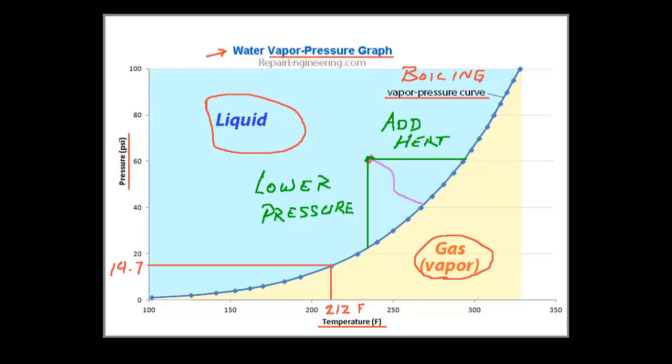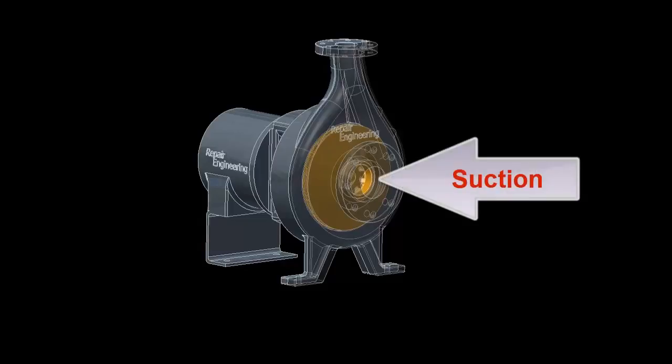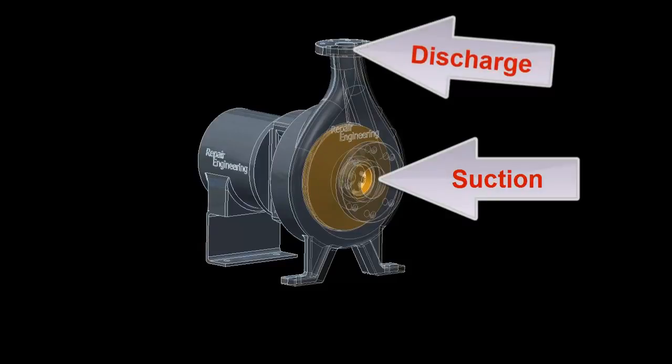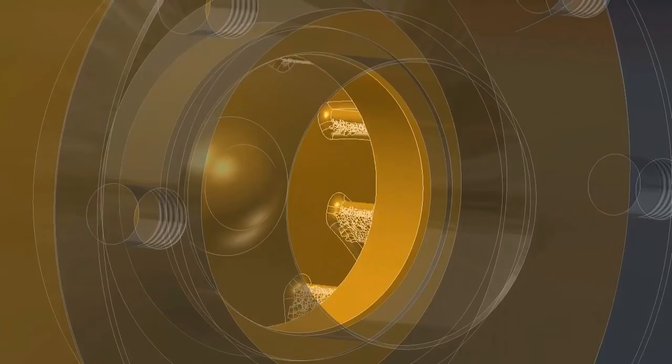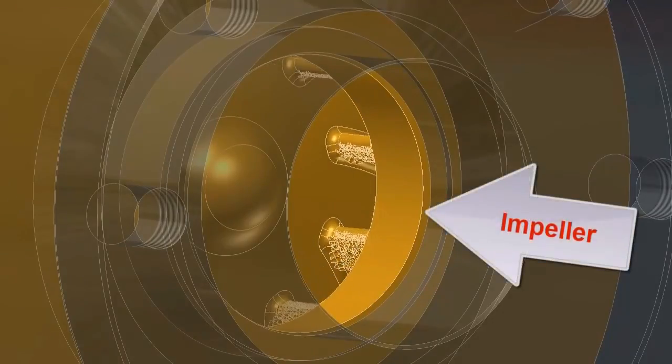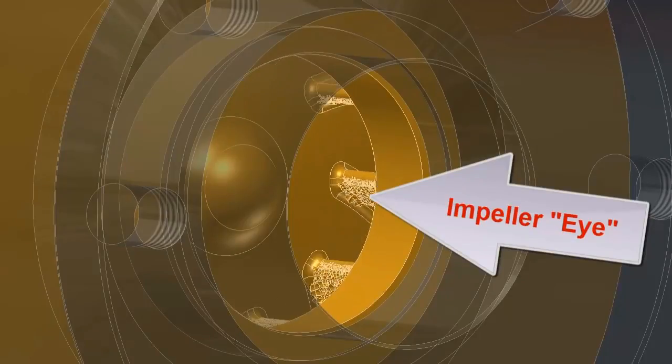So let's see how this applies in an actual application. This is an example of an end suction centrifugal pump. To identify some of the parts of the machine, this is the inlet, or the suction end of the pump, and this is the outlet, or the discharge. And if we zoom in closely, we can see the rotating impeller. This area is known as the eye of the impeller.